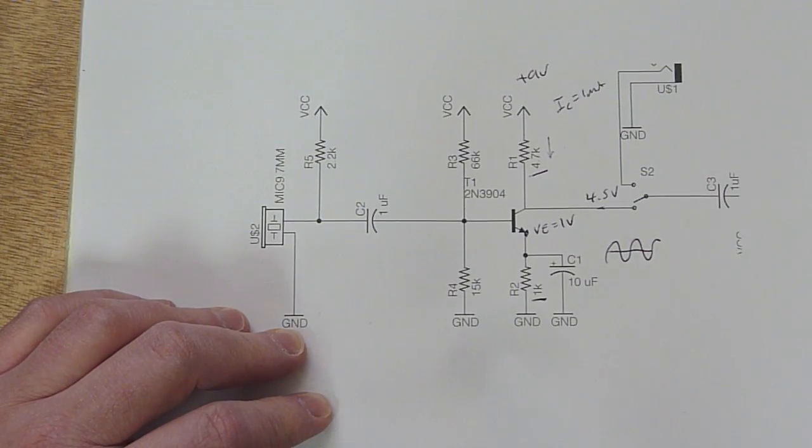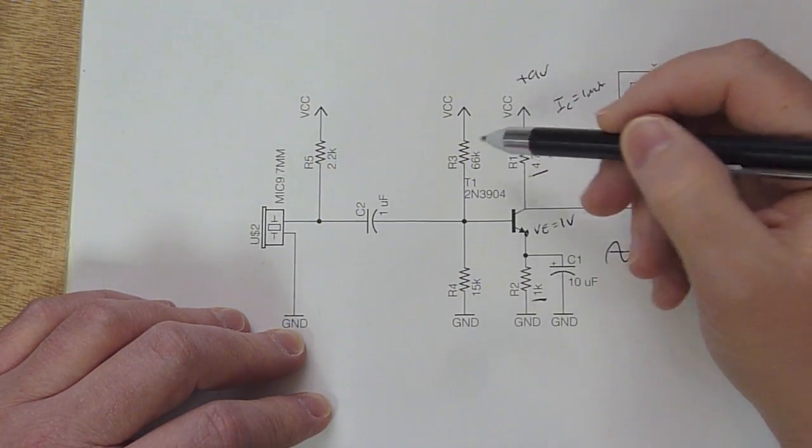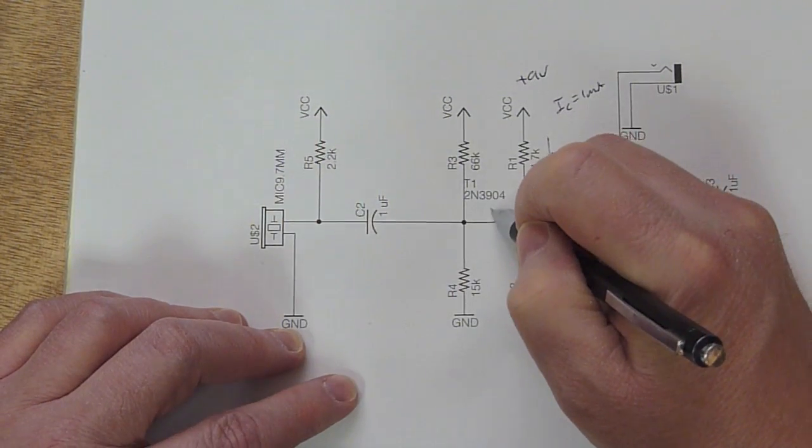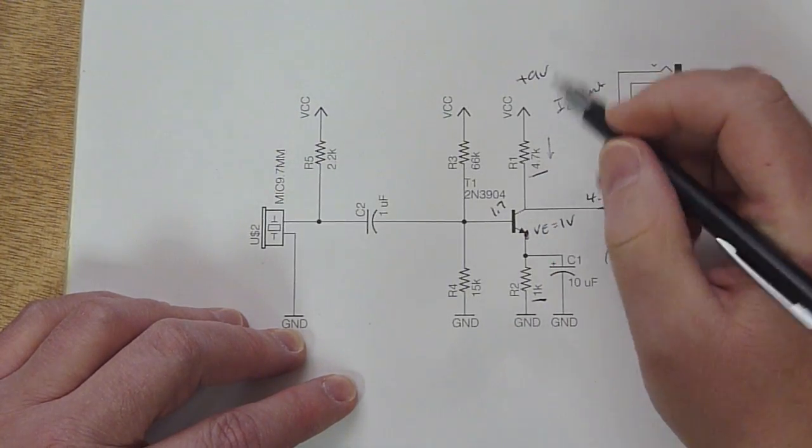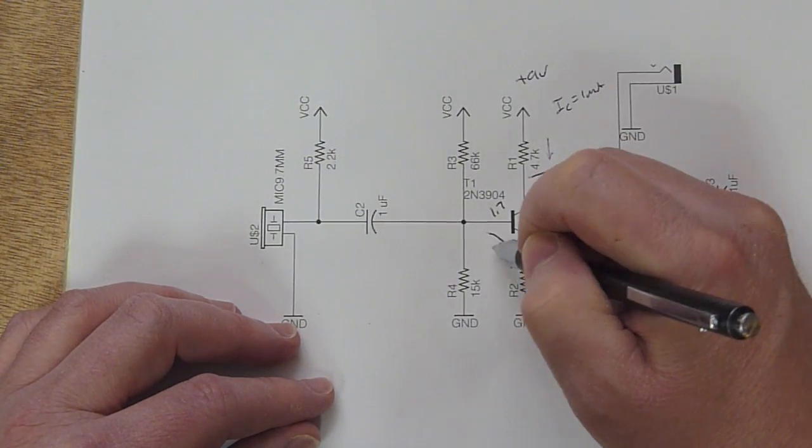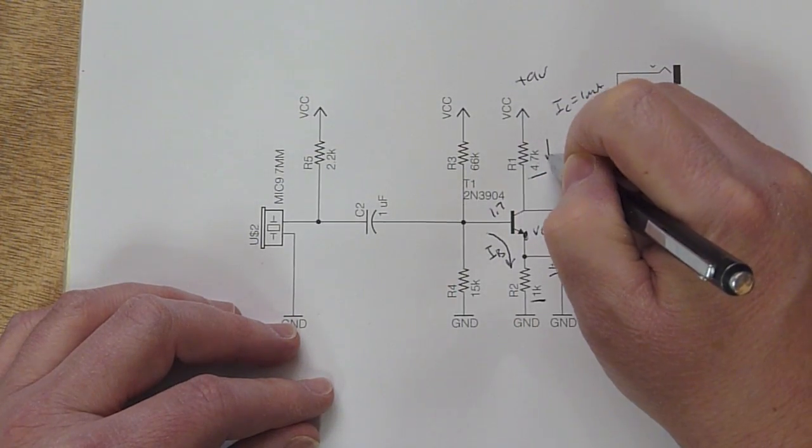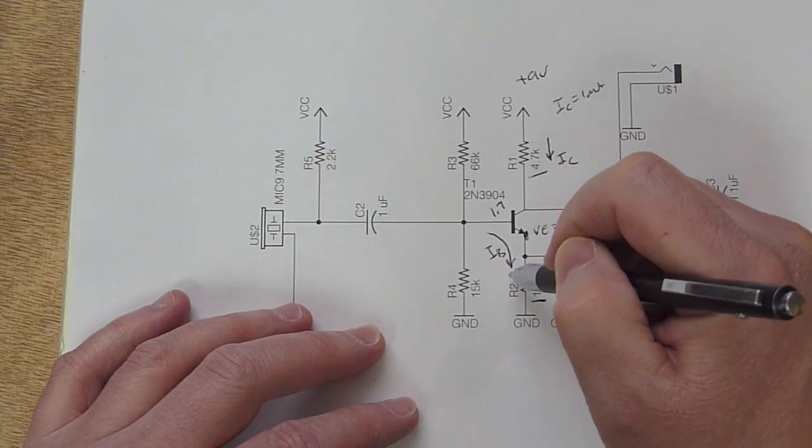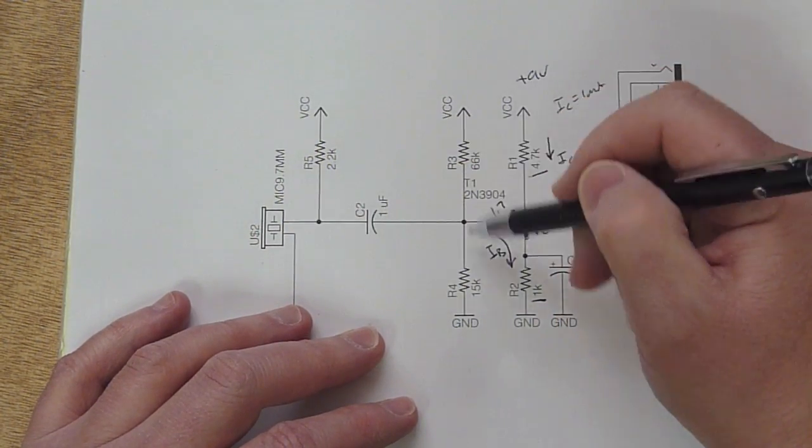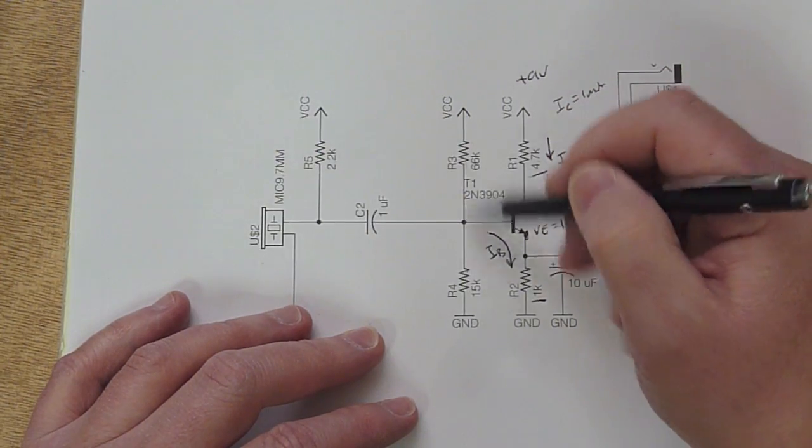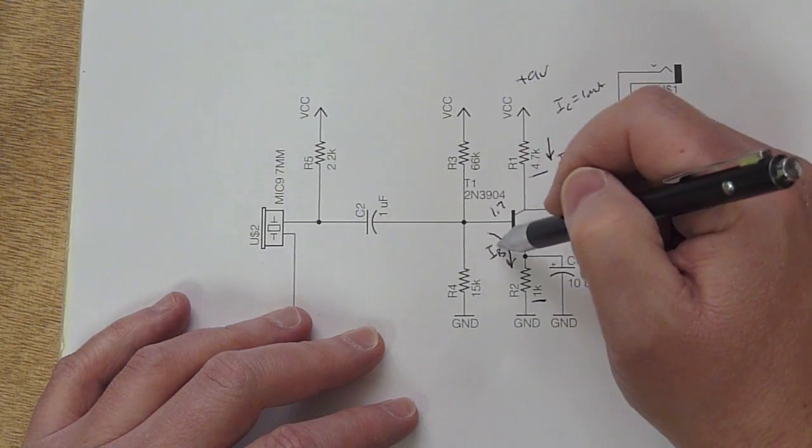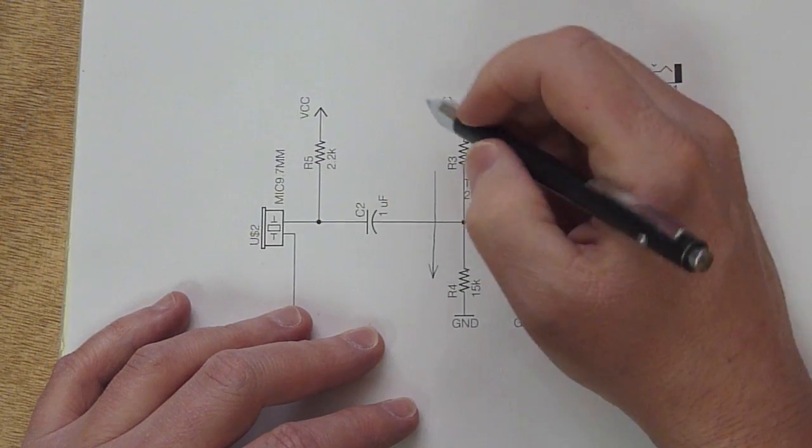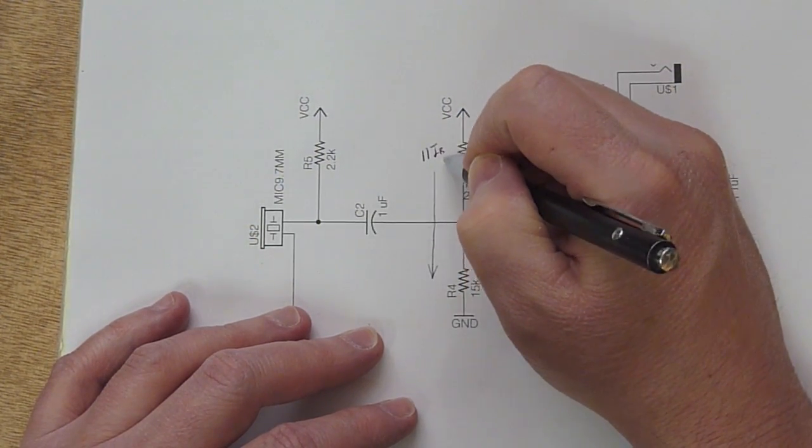Now the next thing that we need to do is we need to calculate what the bias resistors are going to be. So since this is at 1 volt for the emitter, we know that the base is going to sit at about 1.7 or 1.6 volts. And we also know beta, which is the ratio of the base current, which we're going to call IB, to the collector current, which we're going to call IC, is about 100. We have a hundredth of a milliamp flowing through the base. So a rule of thumb is we need to make this voltage divider stiff enough so that the biasing will be robust. And so we want about 10 times IB flowing through this voltage divider.